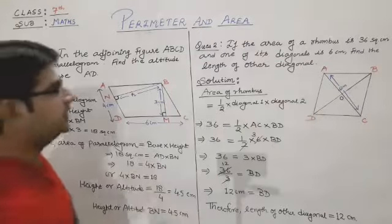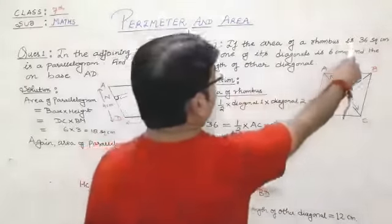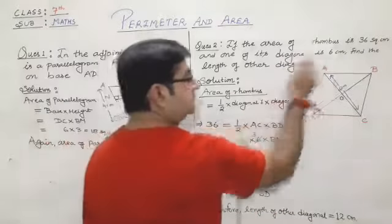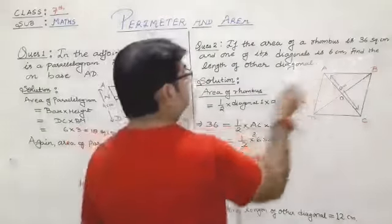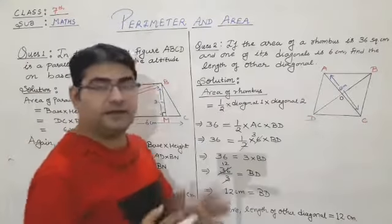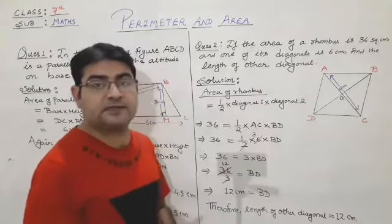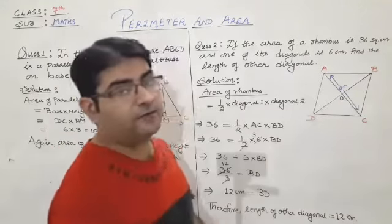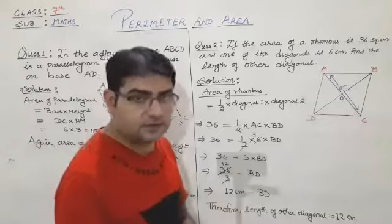Now let's come to the second question. If the area of a rhombus is 36 square centimeters and one of its diagonals is 6 centimeters, find the length of the other diagonal. We are given area of rhombus as 36 square centimeters and the measurement of one diagonal as 6 centimeters. We have to calculate the length of the other diagonal.